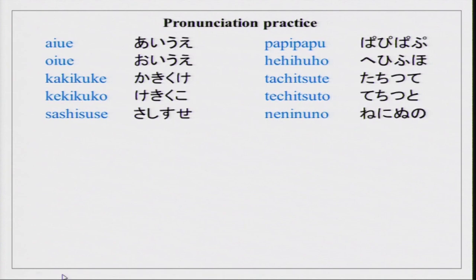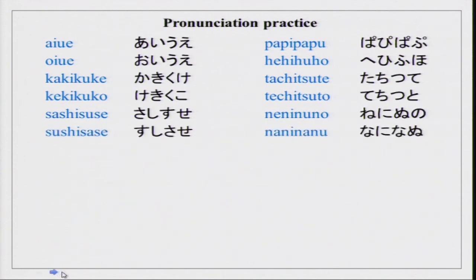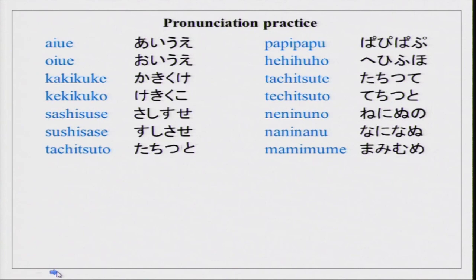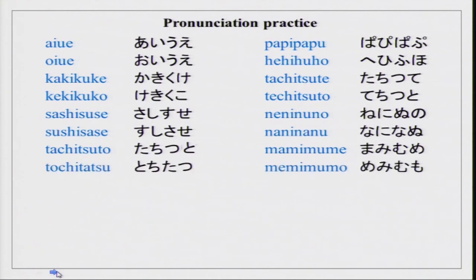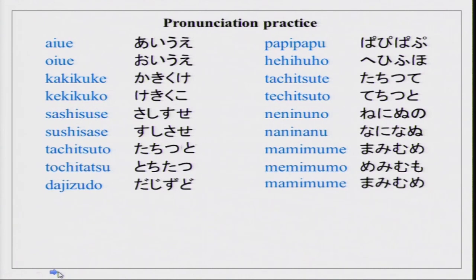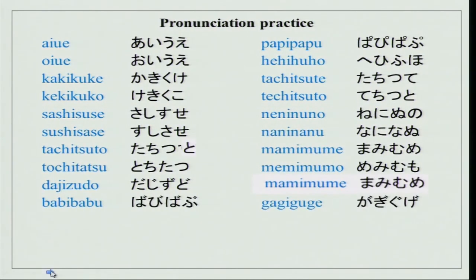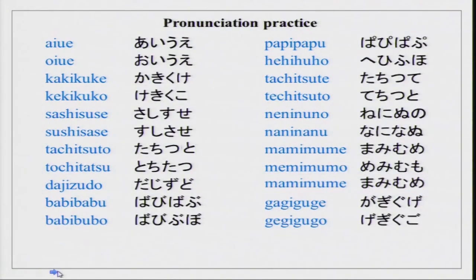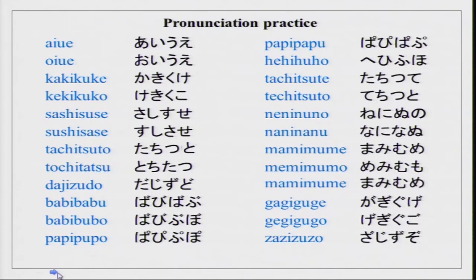Sashisuse. Neninuno. Sushisase. Naninanu. Tachitsuto. Mami mume. Tachitsuto. Memimumou. Dajizudo. Mami mume. Babibabu. Gagiguge. Papi pupo. Pappi pupo. Zaji zuzo.